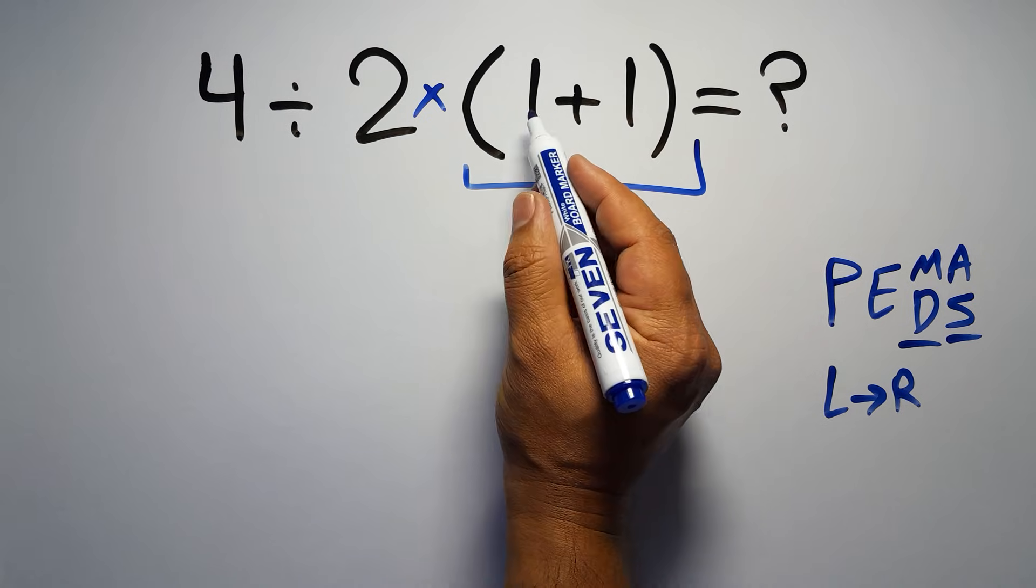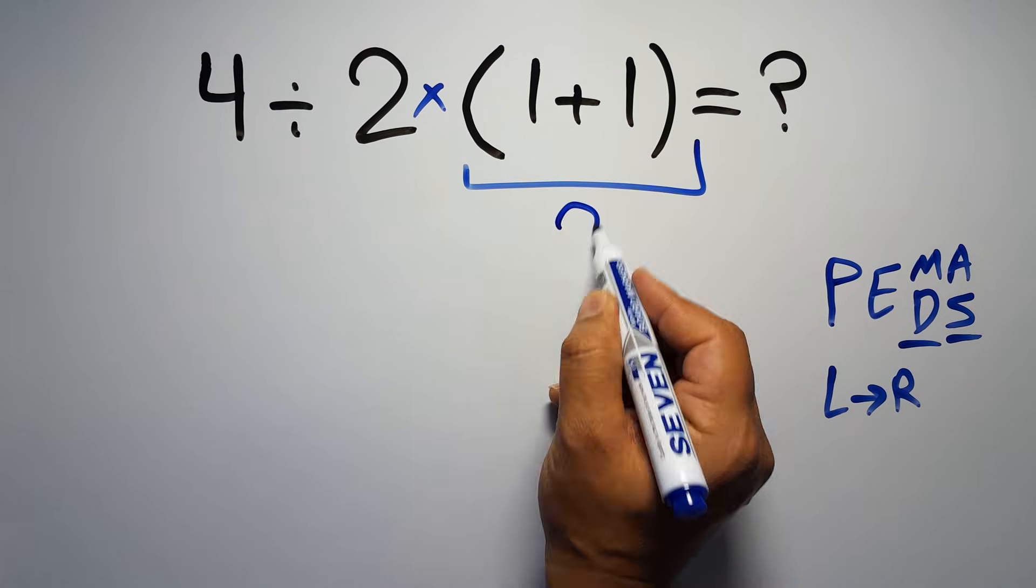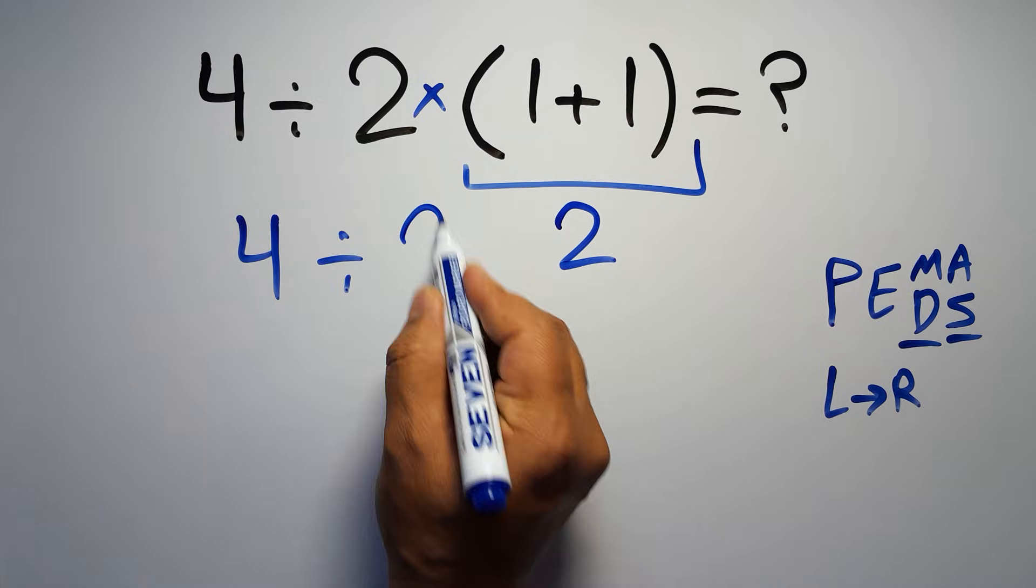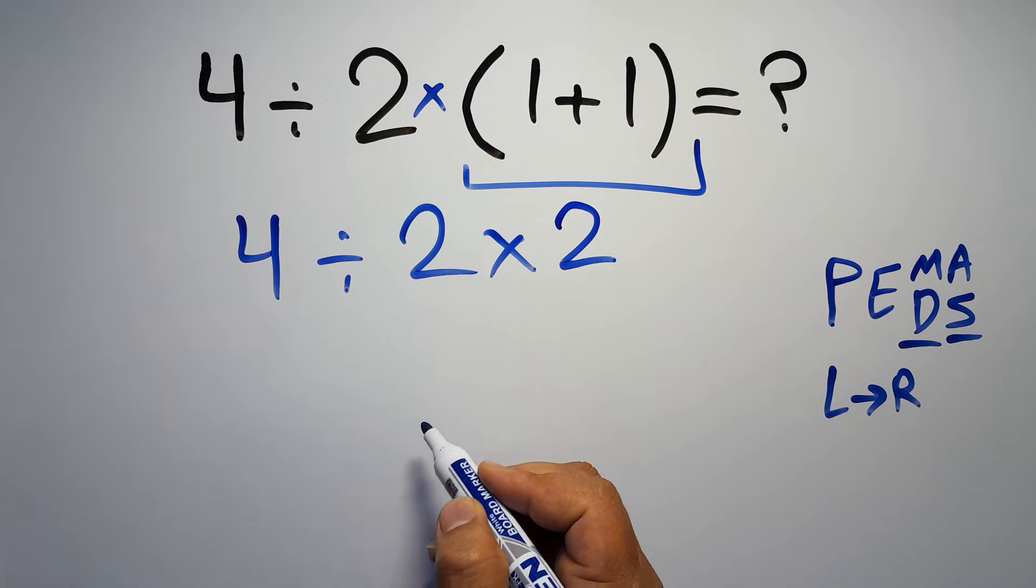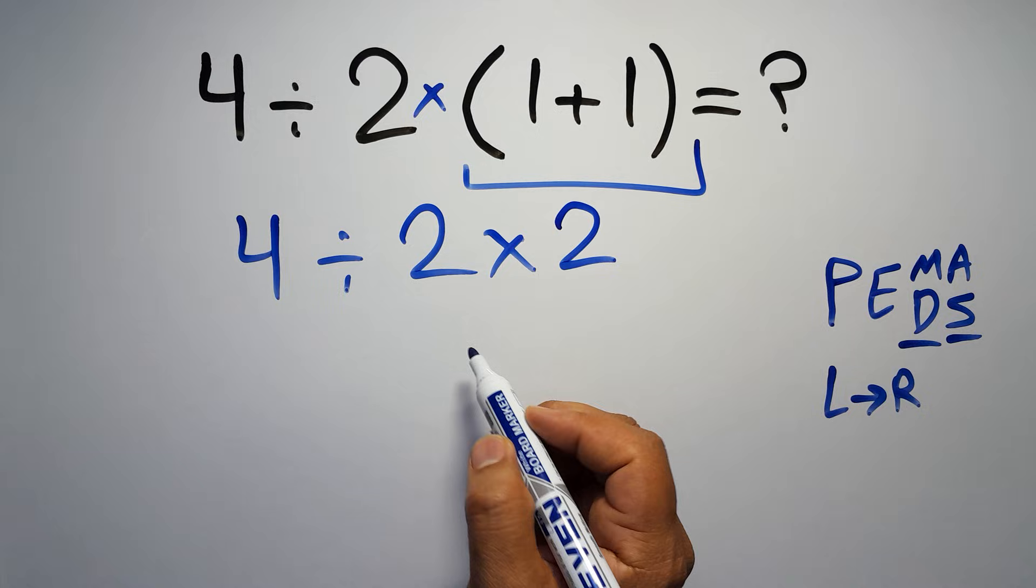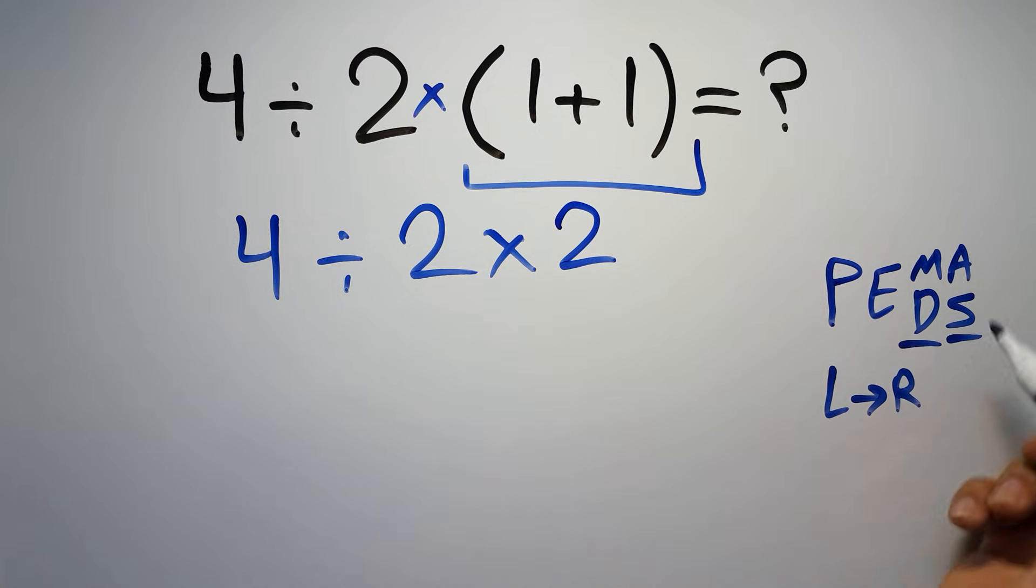Inside this parentheses we have 1 plus 1, which equals 2. So 4 divided by 2, then times 2. Now we have one division and one multiplication. As I said, multiplication and division have equal priority and we